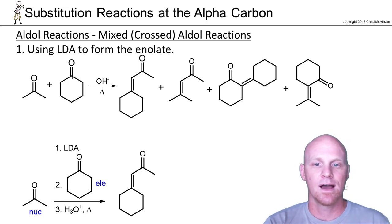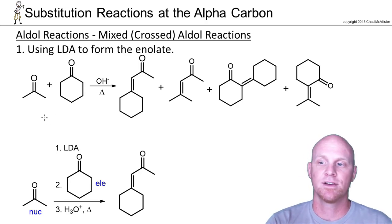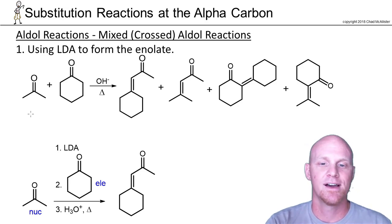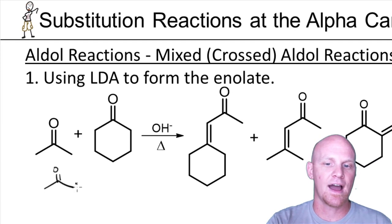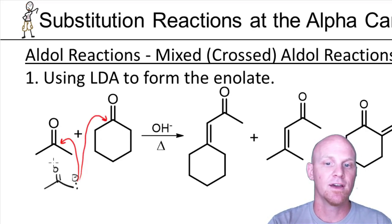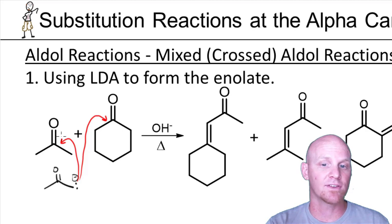If we mix acetone and cyclohexanone under basic conditions, we're going to get four different products — technically even more if we count stereoisomers. The idea is that I could deprotonate the alpha carbon of acetone and form its enolate, and that enolate could go and attack another molecule of acetone or attack cyclohexanone. Keep in mind that only a very small fraction of acetone gets converted into its enolate, which is why you still have acetone left in solution.